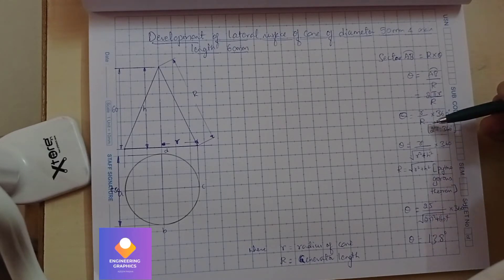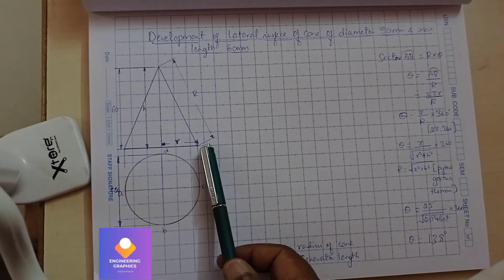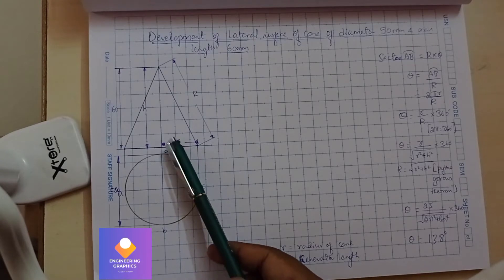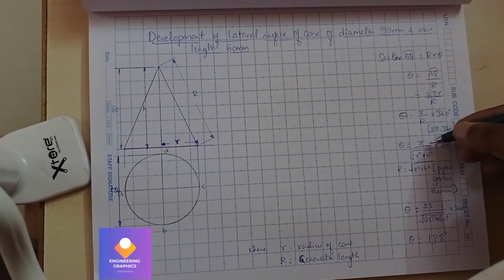Capital R is the generator length. We're going to find it using Pythagoras theorem: capital R equals square root of (r² + h²). Using Pythagoras theorem, we have the radius value of 25 because diameter is 50.